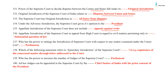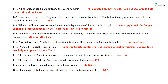Appellate jurisdiction of the Supreme Court in appeals from High Courts in regards to civil matters pertains only to substantial questions of law. Who has the power to enlarge the jurisdiction of the Supreme Court with respect to any matter contained under the Union List? It is the Parliament. Which statement refers to the epistolary jurisdiction of the Supreme Court? These are cases where the court takes cognizance of concerned matters through letters addressed to the court. Who has the power to increase the number of judges of the Supreme Court? It is the Parliament. Ad hoc judges can be appointed in the Supreme Court by the Chief Justice of India with the prior consent of the President. Ad hoc judges can be appointed to the Supreme Court if the requisite number of judges are not available to hold the meeting of the court.